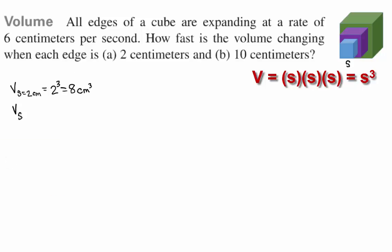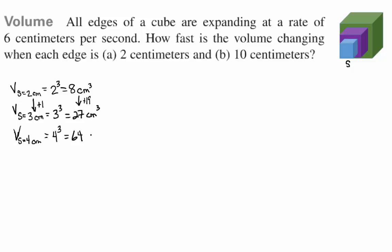And what would the volume be if the size of the side happened to be three? Three cubed or 27 cubic centimeters. So notice that the length of the side increased by one. But how much did the volume increase by? 19. Now what happens when the length of the side is four centimeters? What do we get for the volume then? 64 cubic centimeters. How much of an increase is that? 37.